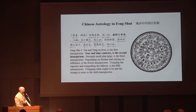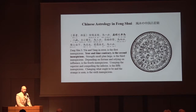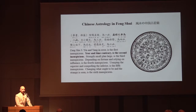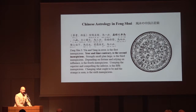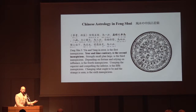A few more of the six inauspicious: 'Strength small, plan large is the third inauspicious' — talking about being overly ambitious in your building design. 'Depending on fortune and relying on influence is the fourth inauspicious' — about being lazy in your building design and counting on the fact that you're a good portrait master. 'Asserting the superior and compelling the inferior is the fifth inauspicious' — talking about using cheap building materials on an expensive property, or trying to use expensive materials on a cheap property. 'Changing what ought to be an estranged scene is the sixth inauspicious' — talking about unpredictable events like natural disasters or property disputes, things beyond your control as a feng shui master hindering your analysis.